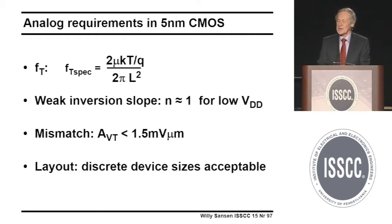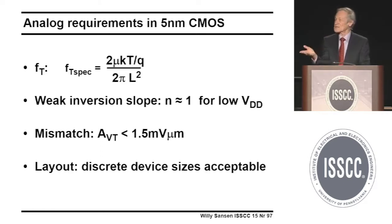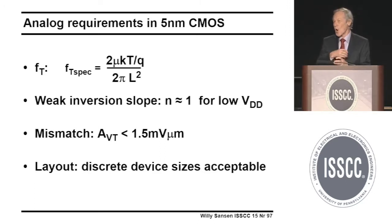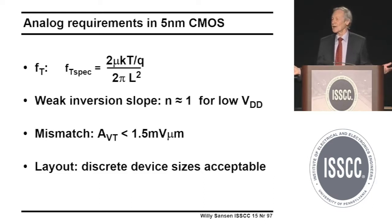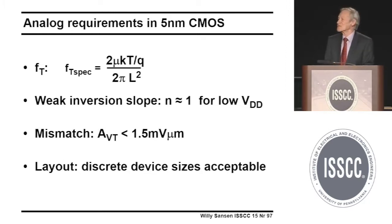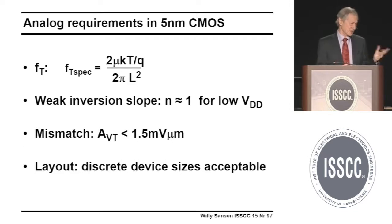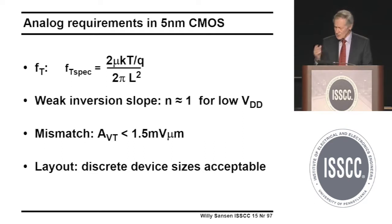We also need a very steep IDS–VGS characteristic. When you go into weak inversion, you need a steep subthreshold slope for a low supply voltage, which requires gate-all-around control. And mismatch — I repeat — is hopeless. Layout tricks: are you going to stretch the channel? No, that's finished. We will use discrete devices — if the current in one device is too small, you take a second, third, or fourth one. Design is done by characterization per transistor and taking more as needed.